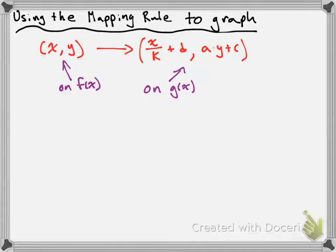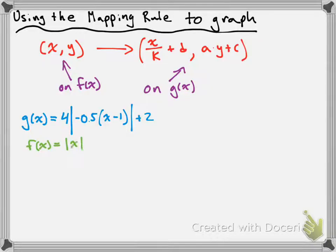Let's go through a demonstration using a real function. What if we do g(x) = 4 times the absolute value of negative 0.5 times x minus 1, plus 2? We're going to apply the mapping rule to the parent function of g(x) in order to get some points on our transformed function. The parent function is just going to be our parent absolute value function, f(x) = |x|. We'll need to get some points on that parent function.